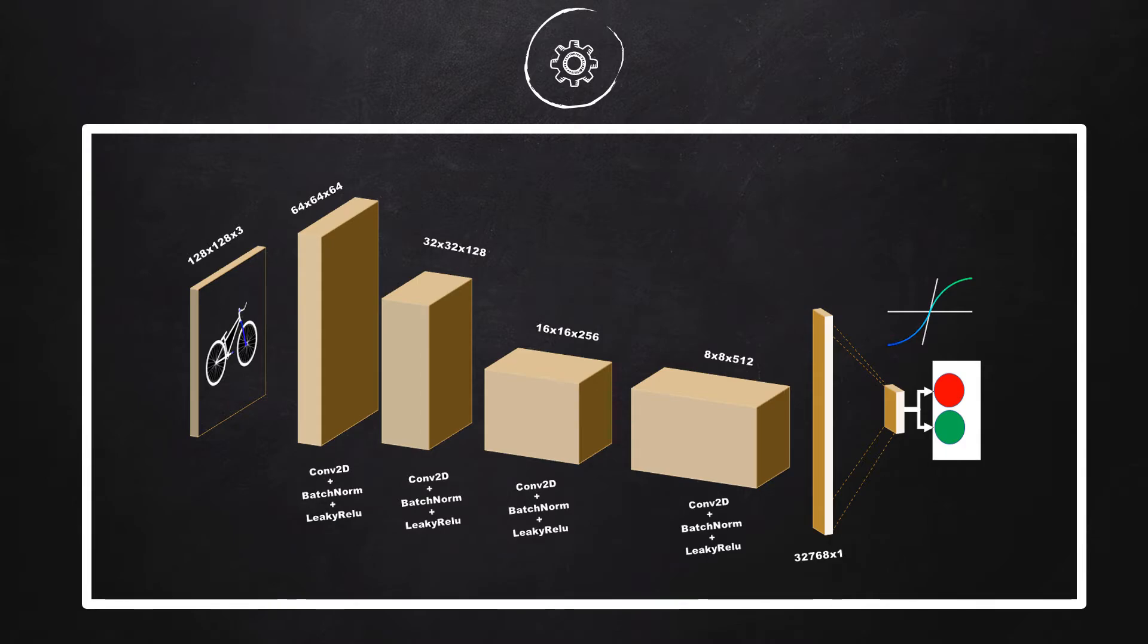The discriminator is constructed in a similar way as the generator, however, the layers are constructed differently. A discriminator is a classification network which takes a color image as an input and outputs a probability value. Therefore, an input layer of the network is 128 by 128 by 3 and output layer is a sigmoid function which results in a probability depicting whether the image is real or a fake image.